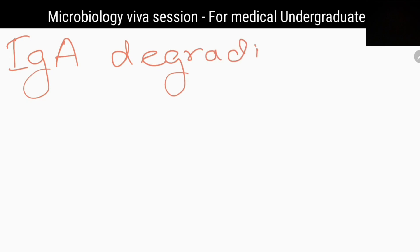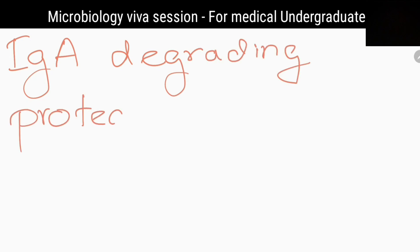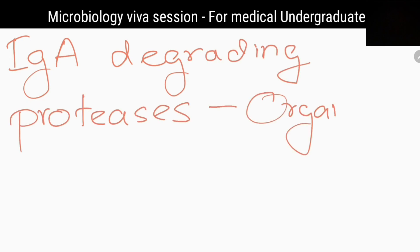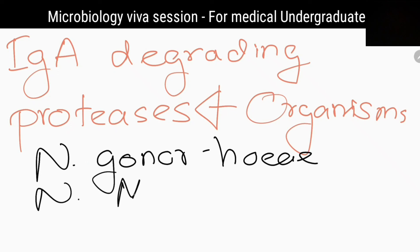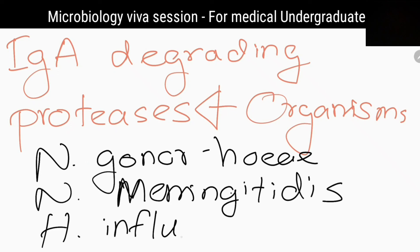What are the organisms that produce IgA-degrading proteases? Neisseria gonorrhoeae, Neisseria meningitidis, and Haemophilus influenzae.